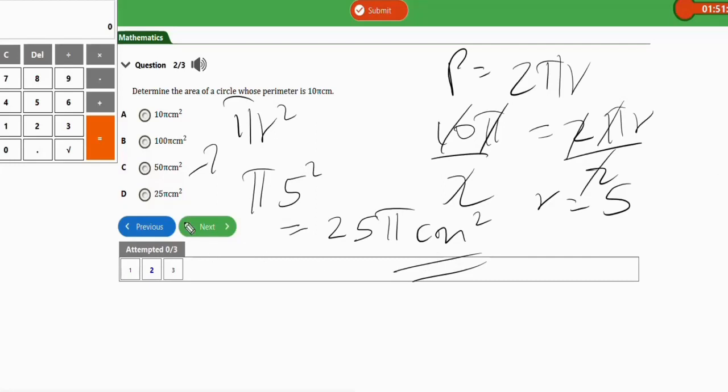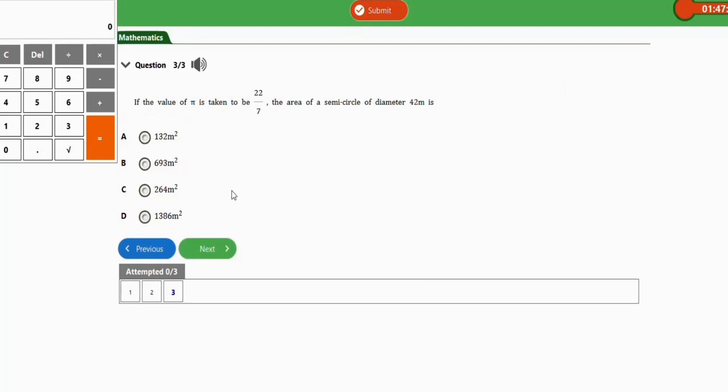Let's wipe this now and solve the last question before we can call this a class. All right, so this is the last question. It says if the value of π is taken to be this, the area of a semicircle of diameter 42 meter is what? Now for area of a semicircle, this is the formula we're going to apply: half πr².